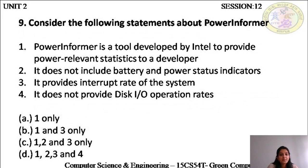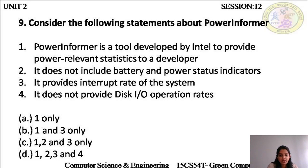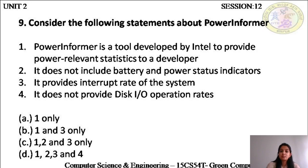The following statements about Power Informer. Power Informer is a software tool developed by Intel to provide power-relevant statistics to a developer, helping the developer to develop more energy efficient applications — the first one is correct. It does not include battery and power status indicators — this is wrong, it definitely includes battery and power status indicators — the second point is wrong. It provides the interrupt rate of the system — the number of times the system interrupt is actually thrown — that is correct. It does not provide disk input/output operation rates — this is wrong, as it provides both disk I/O operation rates as well as file I/O and read operation rates. The answer is 1 and 3.